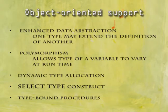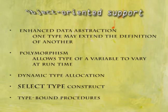Object-oriented support includes enhanced data abstraction, where one type may extend the definition of another. Polymorphism allows the type of a variable to vary at runtime. Features include dynamic type allocation, the select type construct, and type-bound procedures.